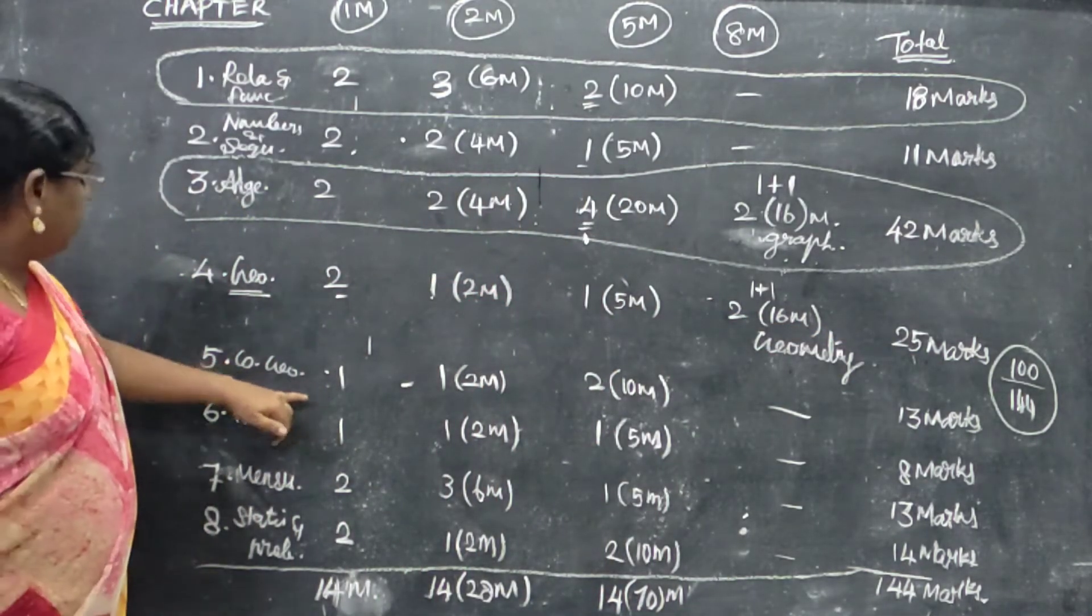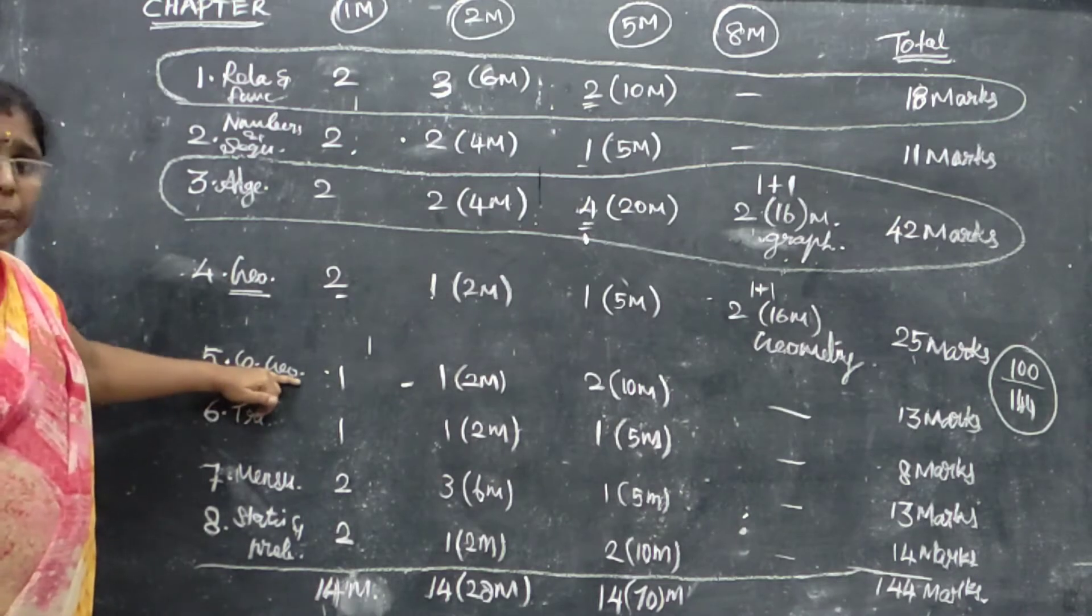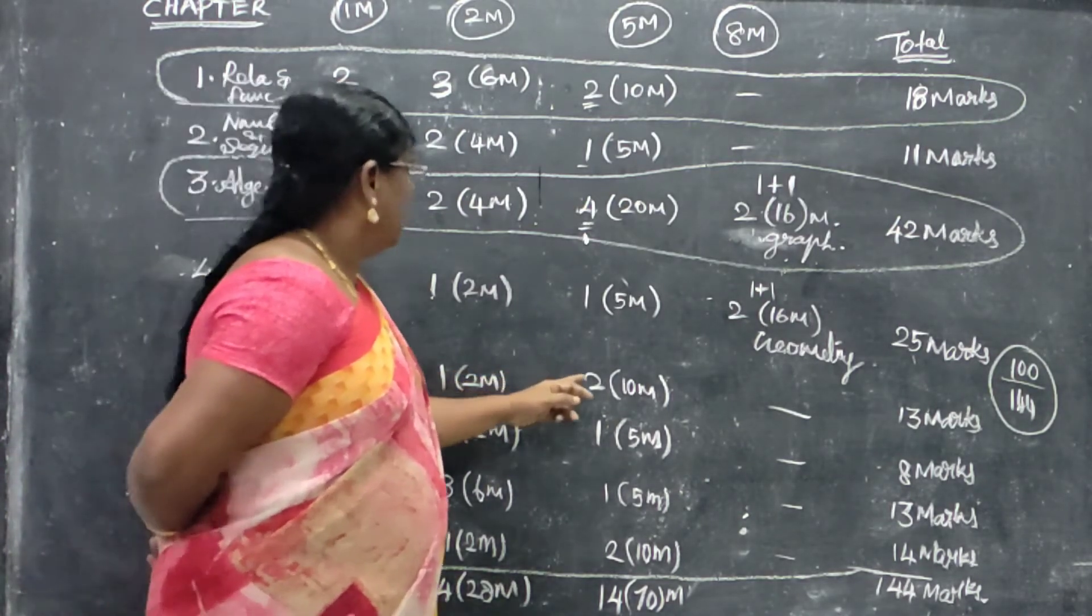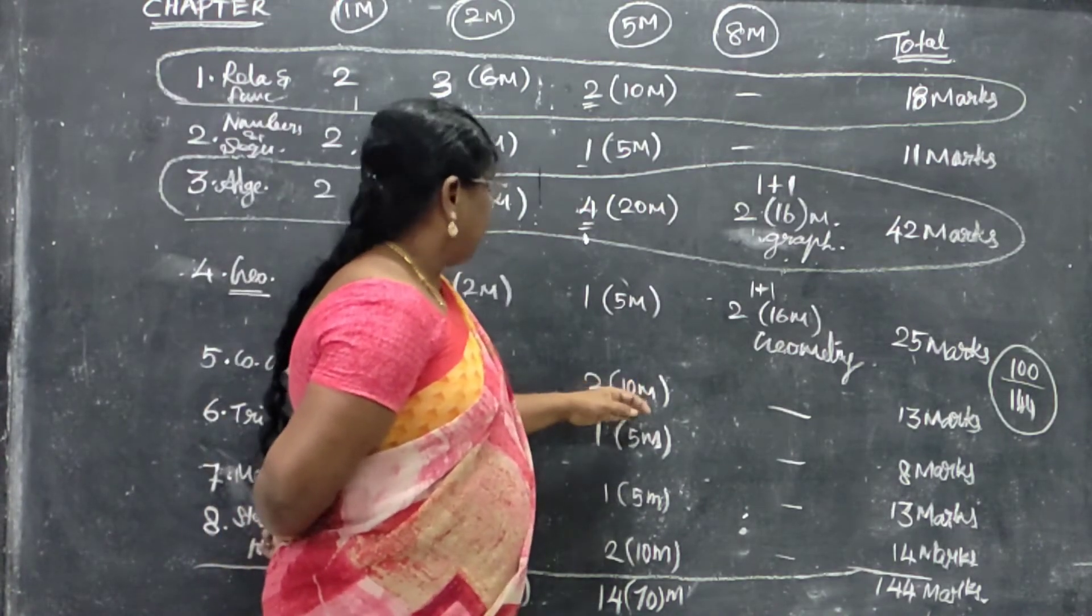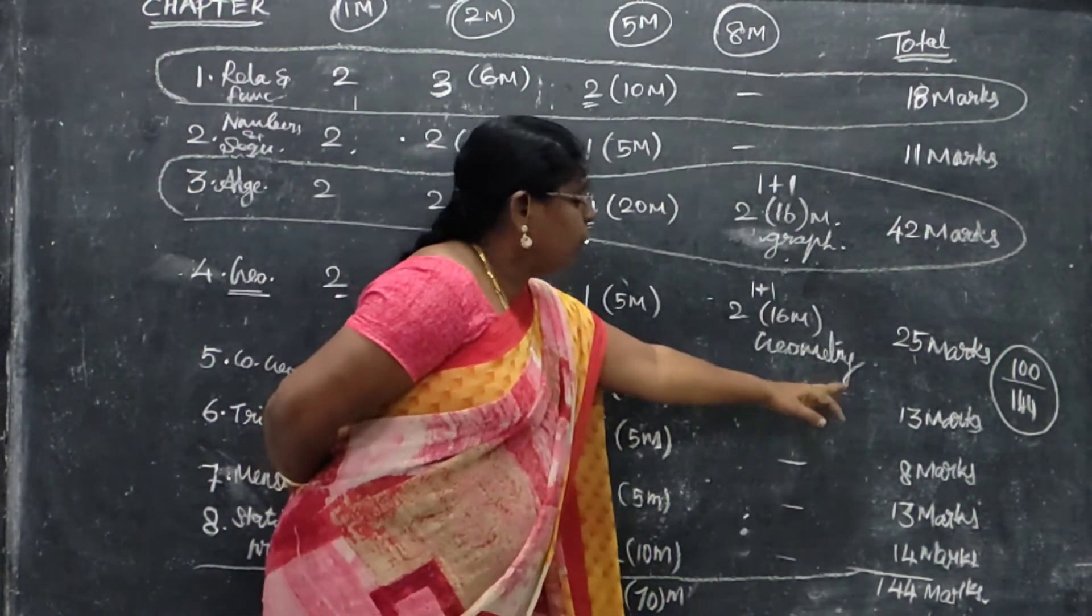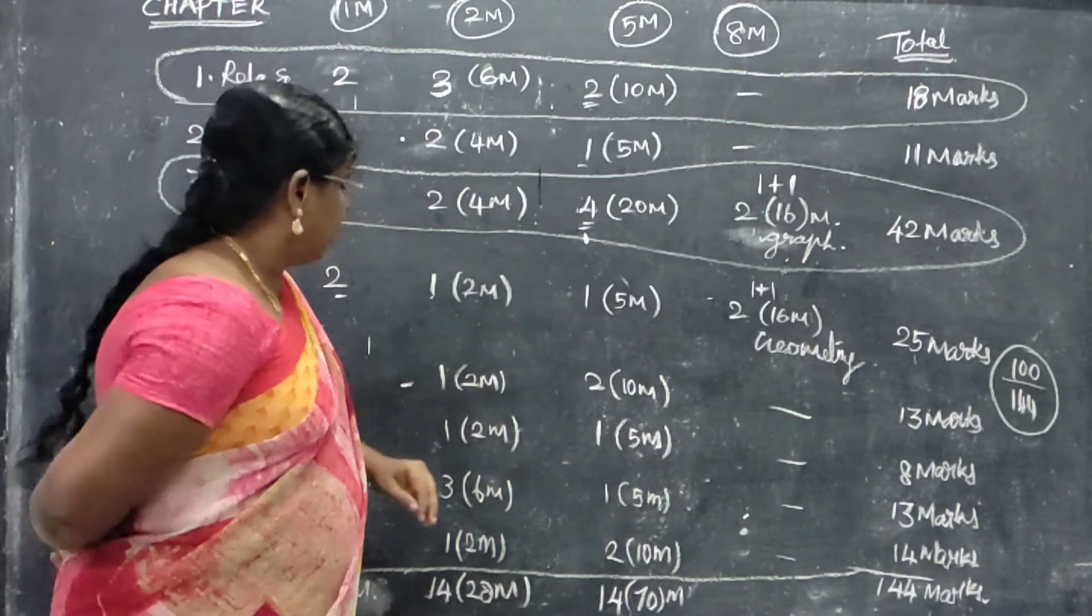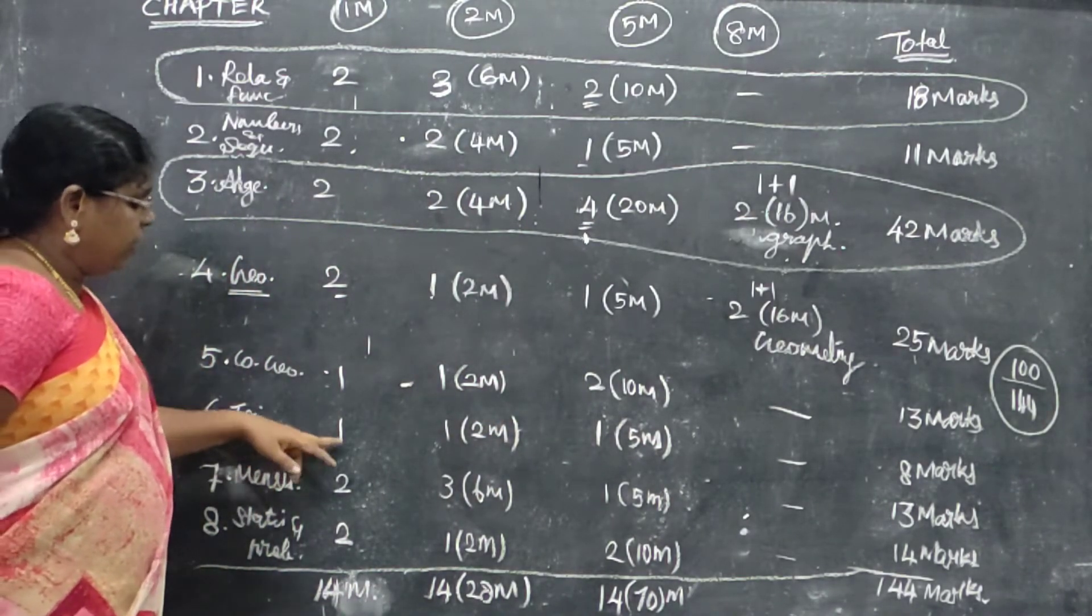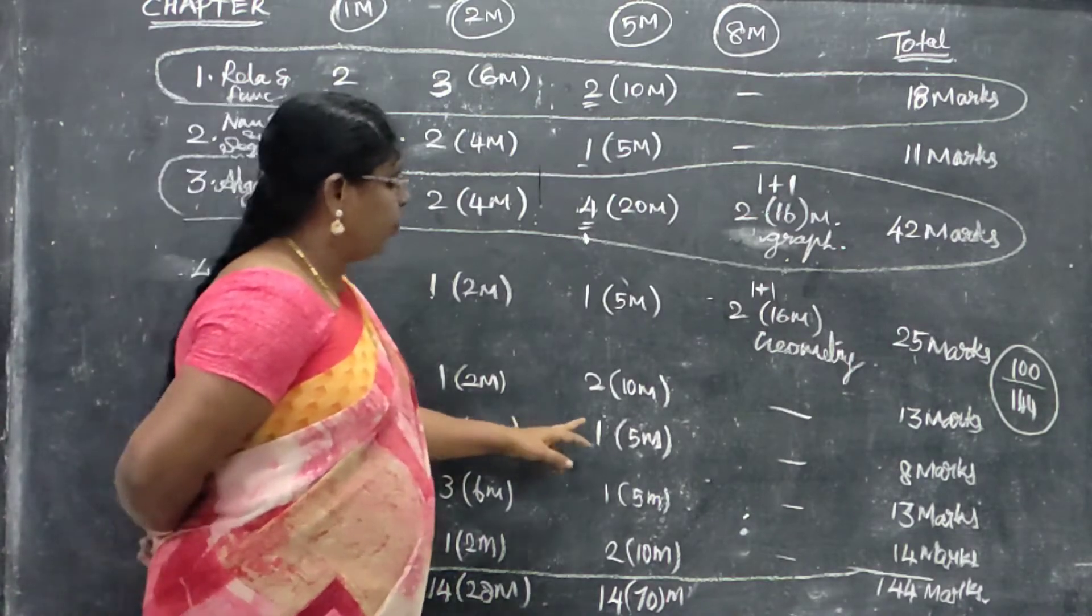Next, coordinate. For 50. Coordinate, 1 one mark, 1 two mark, 5 mark. Total, 1, 1, 2 mark marks.